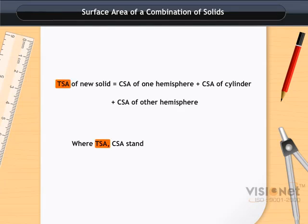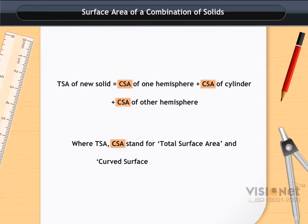Here TSA stands for total surface area and CSA stands for curved surface area respectively.